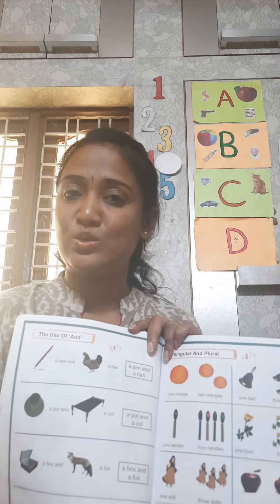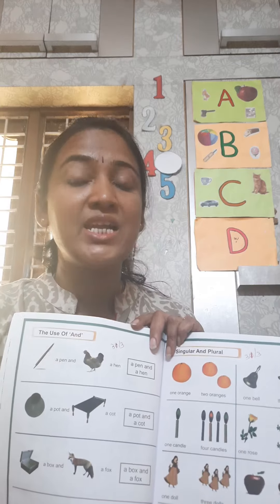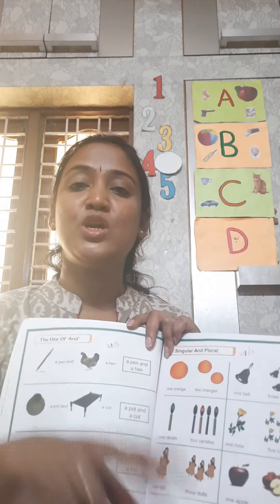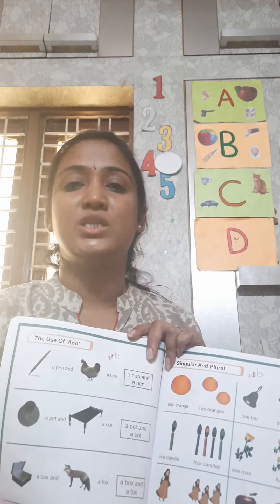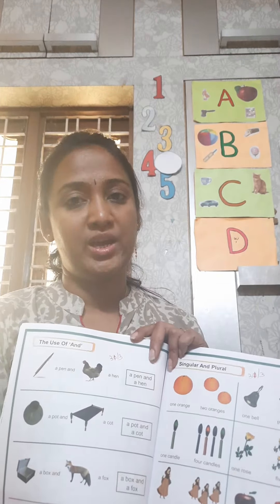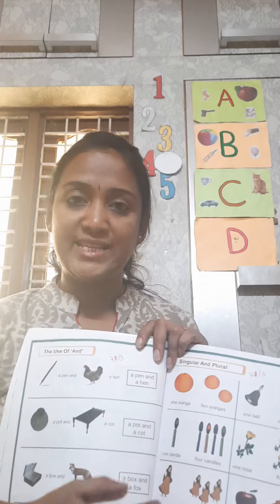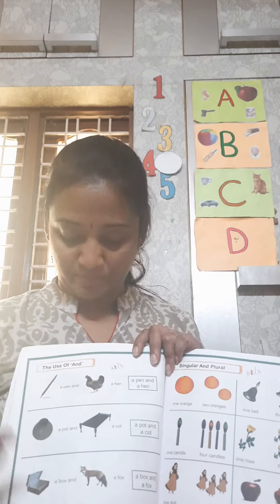Ok children, so when 'and' is used, it is used to join two words. Let's see an example for that.